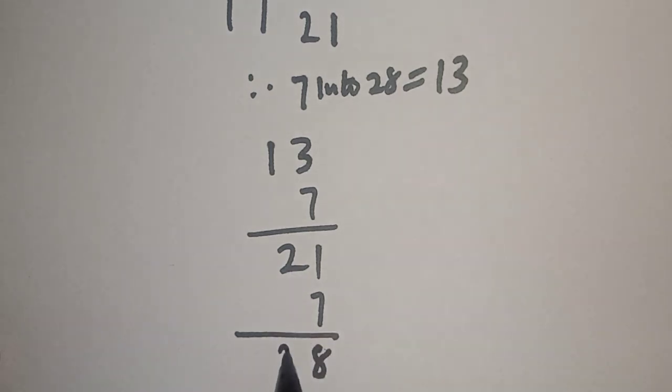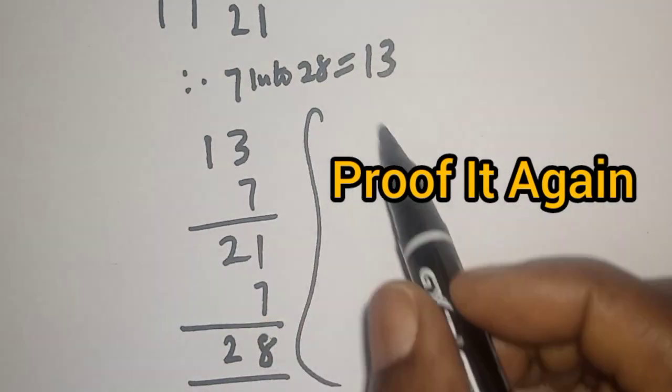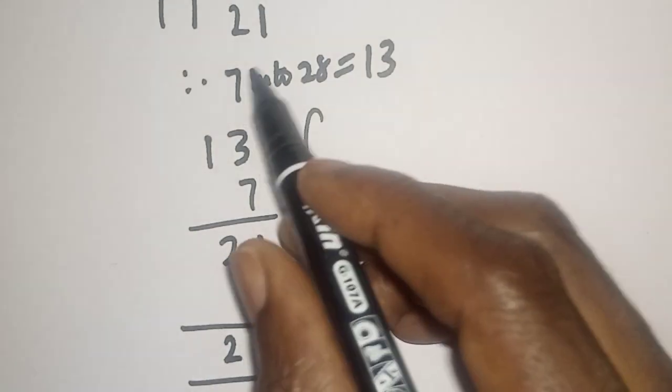We can also prove this from this answer again, which is 13. That is 7 to 28. We have 13, seven places.